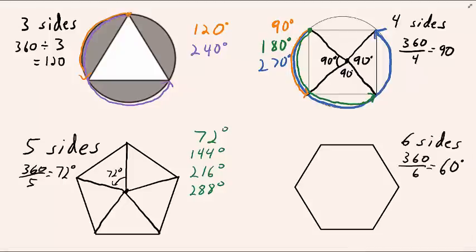Likewise, the smallest angle of rotation for a regular hexagon is 60 degrees because one-sixth of 360 is 60 degrees.